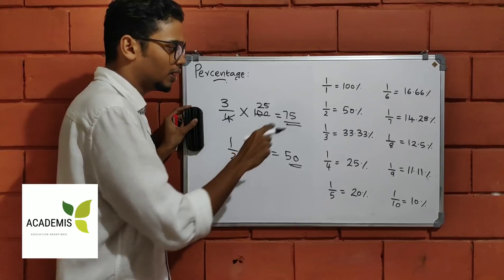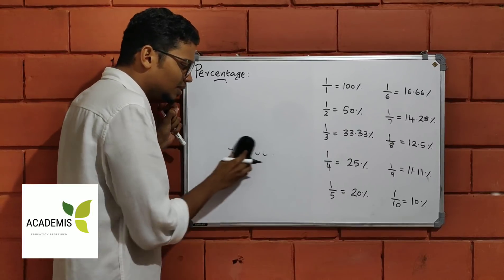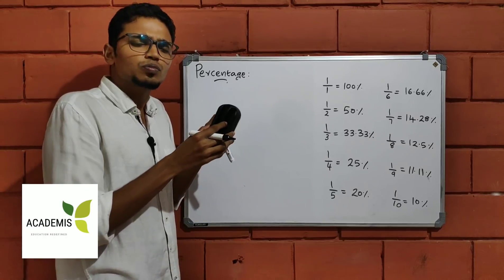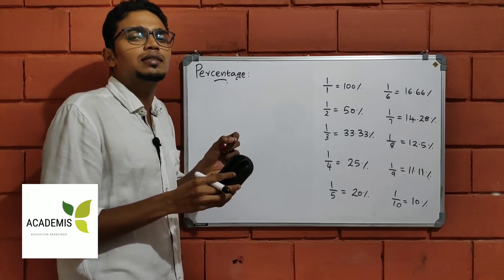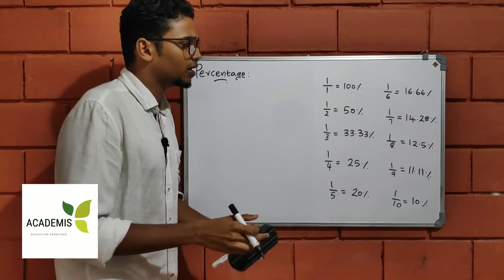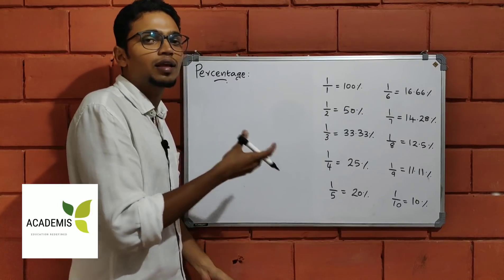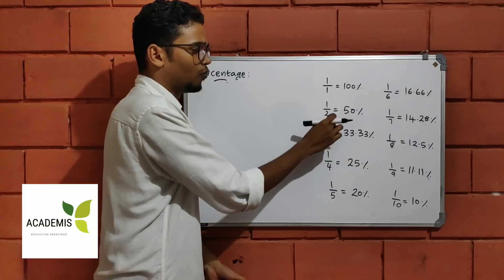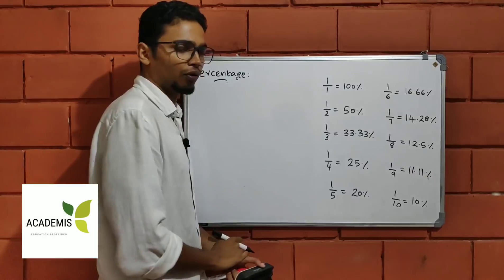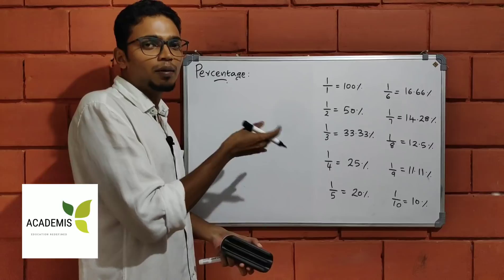Is this clear? I've learned 10 values. The base of percentage is these 10 values. These 10 values are easy to memorize. I've done fractions and their percentage values: 1 by 1 × 100 = 100%, 1 by 2 × 100 = 50%, 1 by 3 × 100 = 33.33%, 1 by 4 × 100 = 25%. These 10 values are easy to finish.